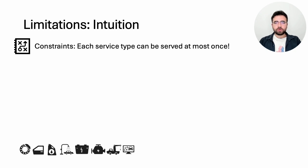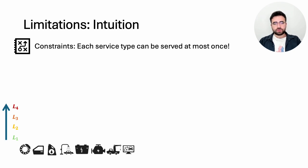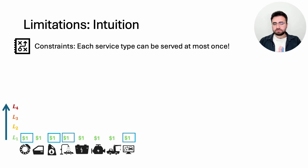We start by building some intuition about what could go wrong for an algorithm. We first construct a hard example without considering pairwise independence. Going back to our auto shop example: assume there are eight different types of services, each served at most once per day. We construct levels such that lower level customers pay lower values and higher level customers pay higher values. An algorithm sees customers starting from level one upward. In level one, there is one customer for each service type willing to pay one dollar; the algorithm selects some of them to serve.